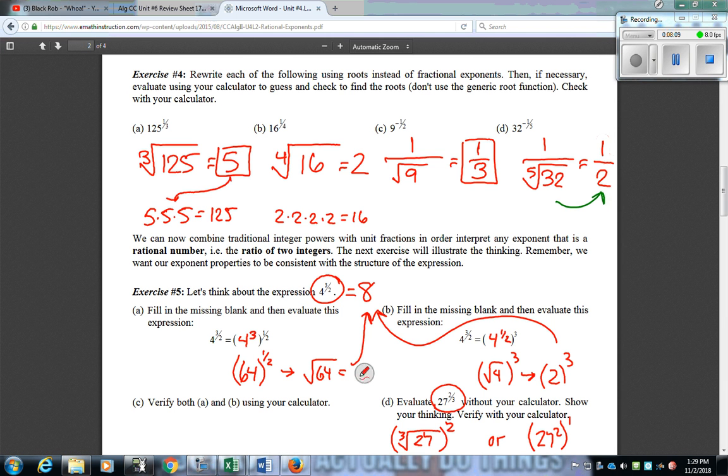And 27 squared to the 1 3rd power should give us the same answer we get for each one. And you can verify each of these in the calculator by typing them in as you see them. But in this case, 27 to the 2 3rd power would be 9.